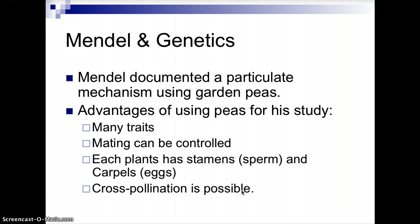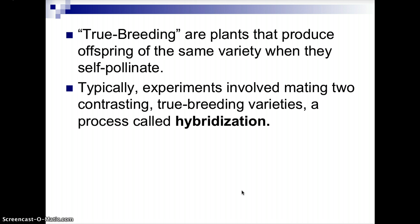A plant has both stamens, which contain the sperm, and carpels, which contain the eggs. This allowed for cross-pollination. A true breeding plant is one that produces offspring of the same variety when they self-pollinate. Typically experiments involved mating two contrasting true breeding varieties. When you cross-pollinate between two contrasting trait plants that are true breeding, that is called hybridization — a hybrid being basically a mix of two things, like a pit bull, which is a hybrid between a bulldog and a pit bull.